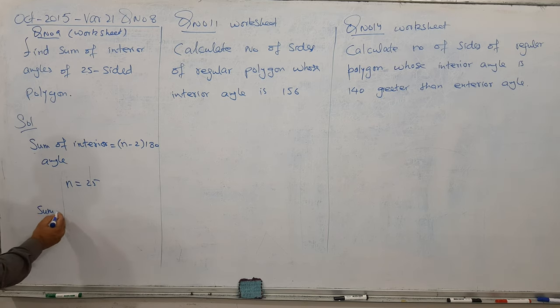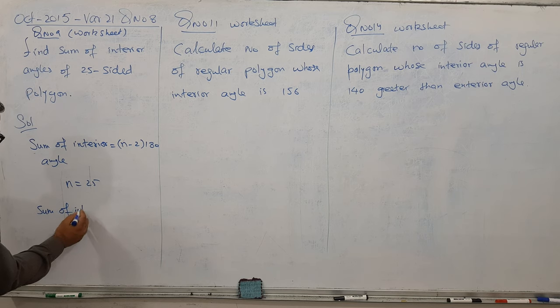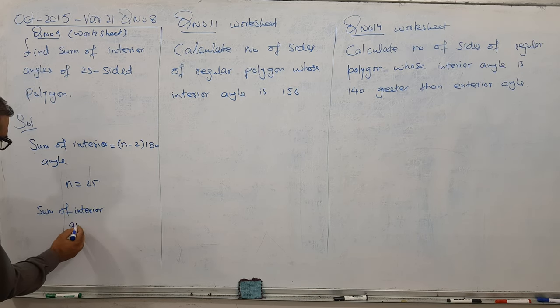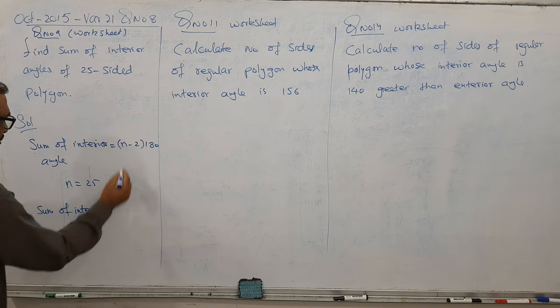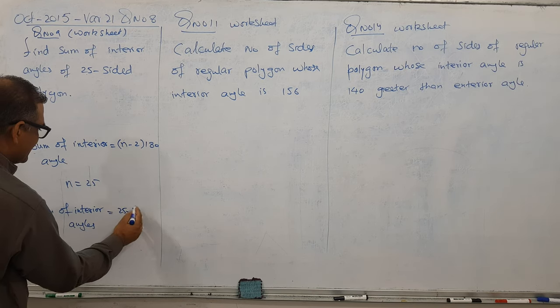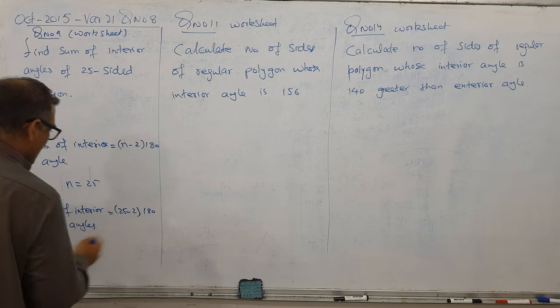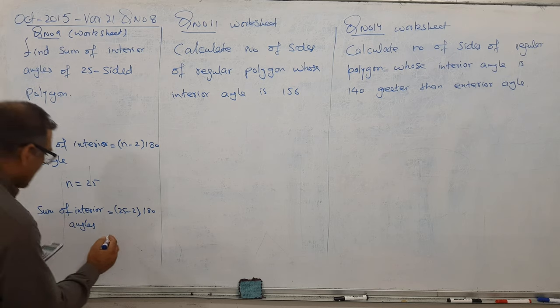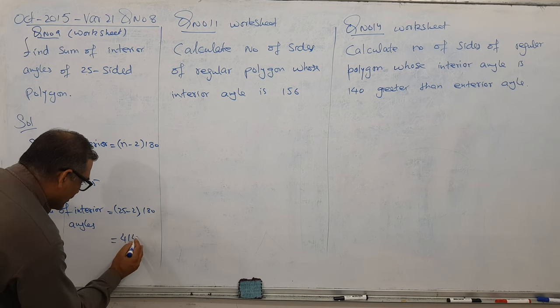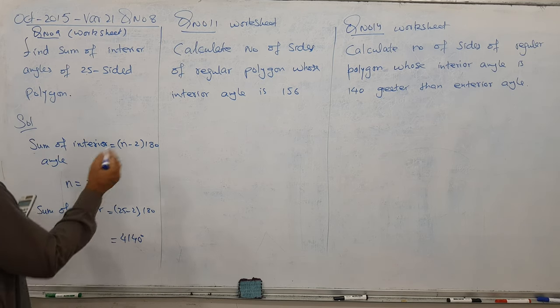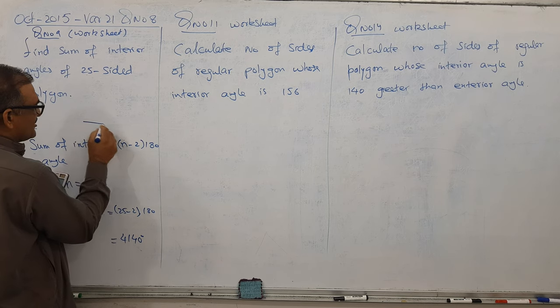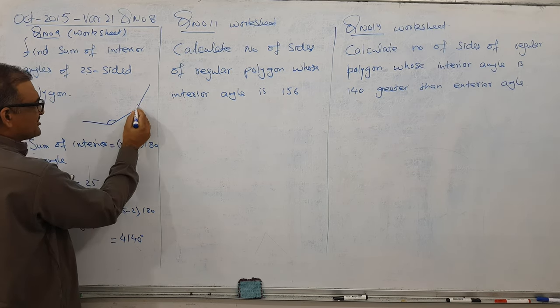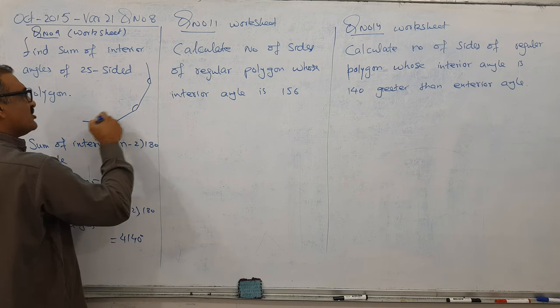So simply I can find the sum of interior angles. Replace 25 here, that's it. So it means 23 times 180 equals 4140. So the sum of interior angles is 4140 degrees.